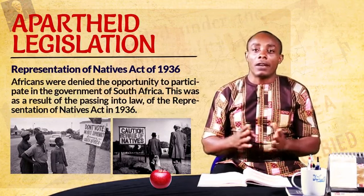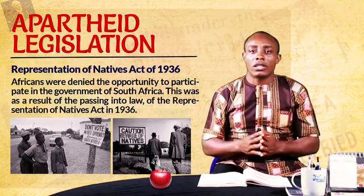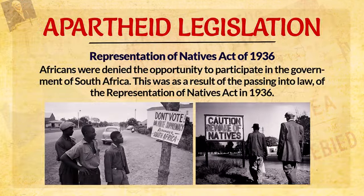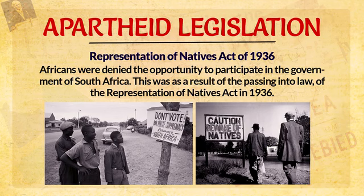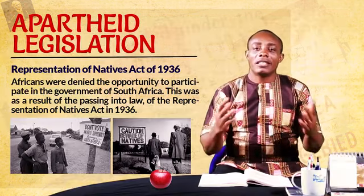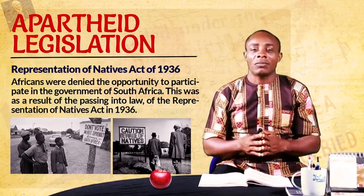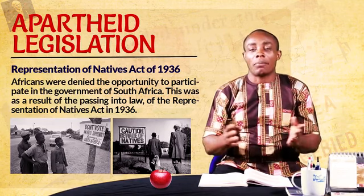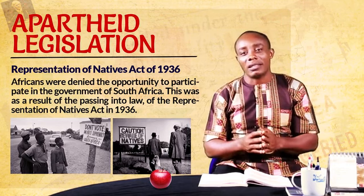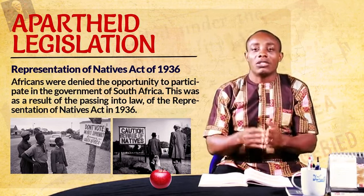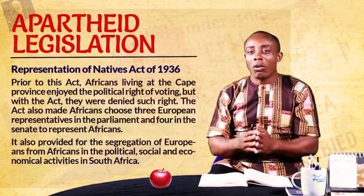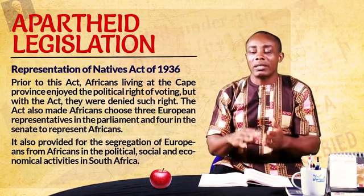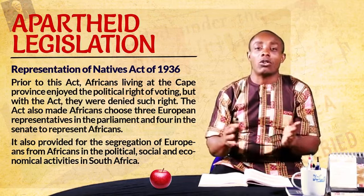This brings us to the Representation of Native Act, passed in the year 1936. This act denied Africans the right to participate in the political process or in government. Before this time, especially in the Cape Colony, Africans took part in the voting process. But by this act, this right of voting was denied to Africans. Furthermore, this act also empowered Africans to choose only three Europeans to represent them in Parliament and four at the Senate. This act established the foundation for segregation in political, social, and economic affairs in South Africa.